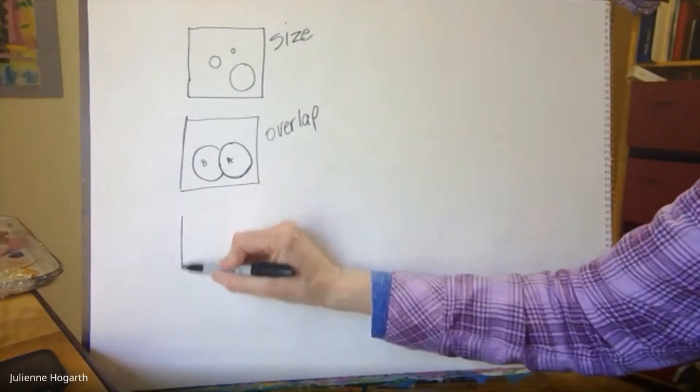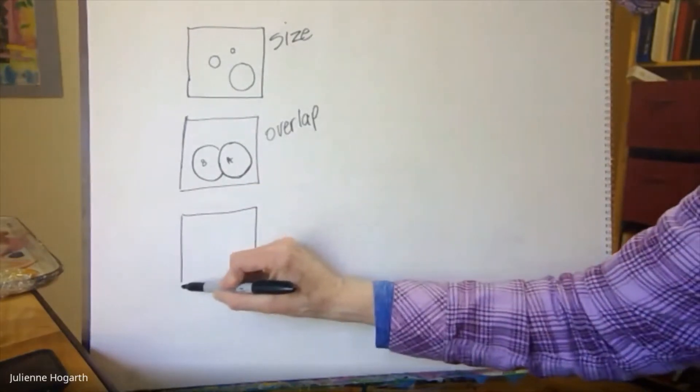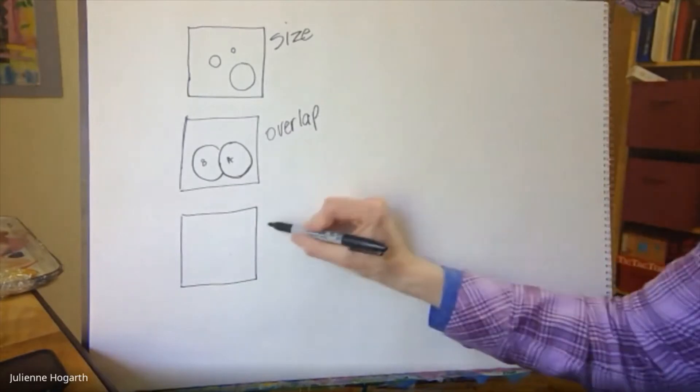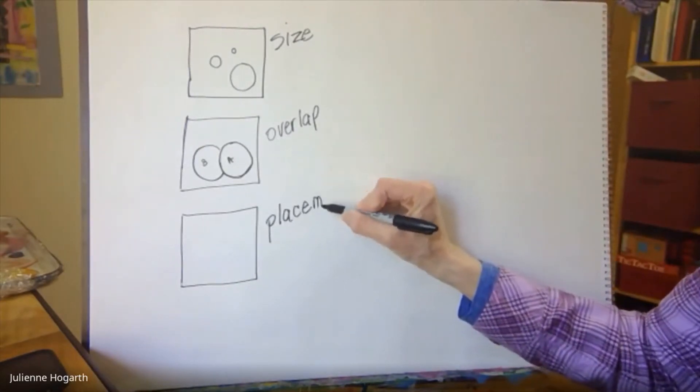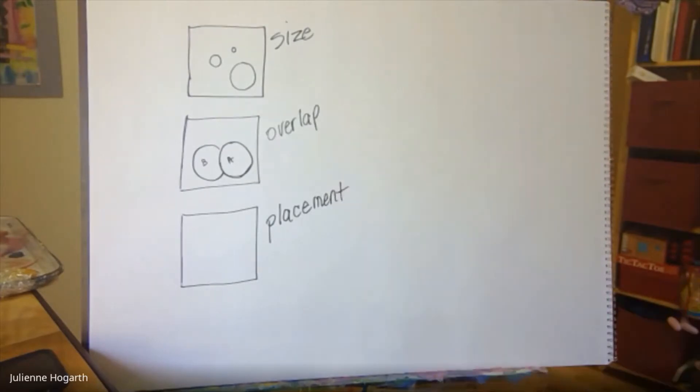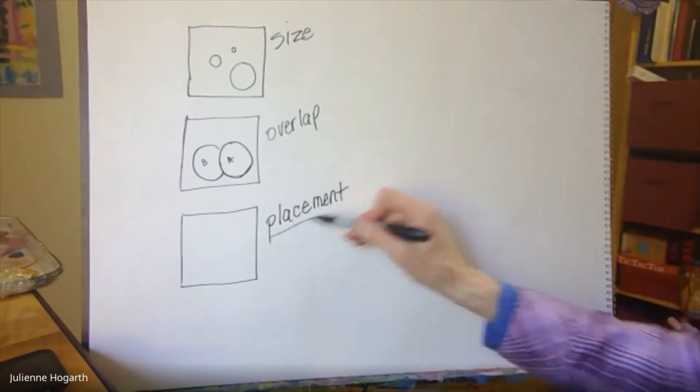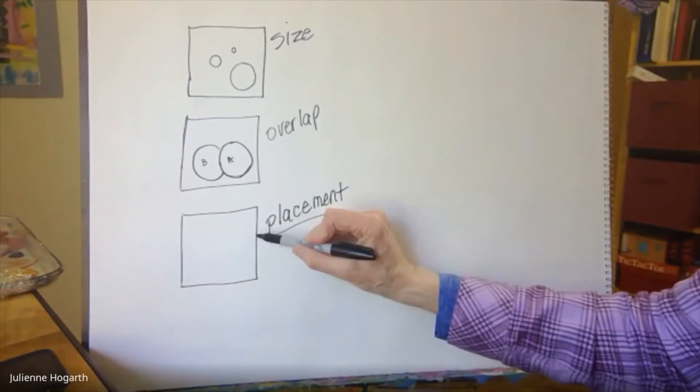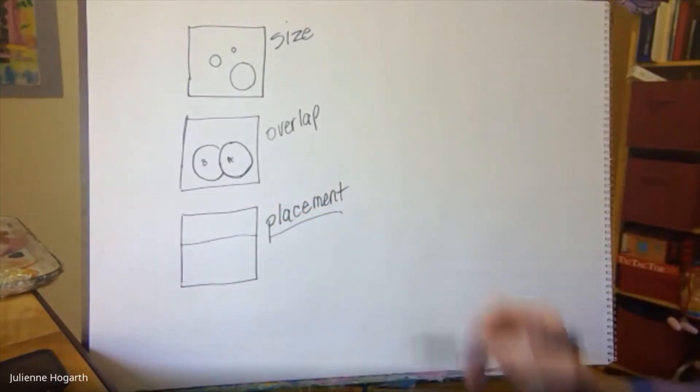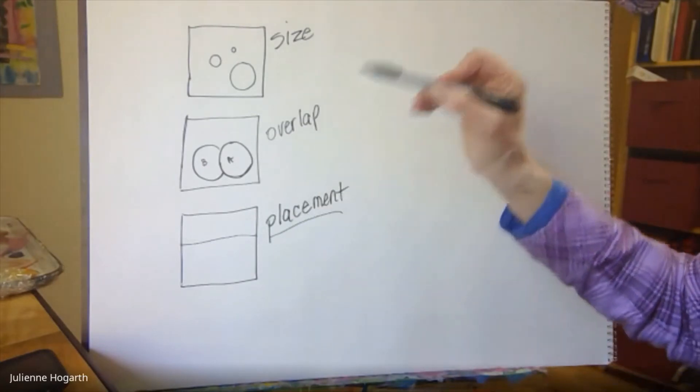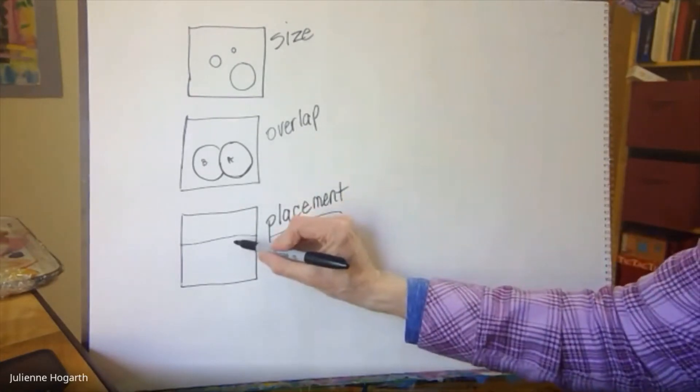Now this one's tricky. A lot of people call it different things. I like to call it placement because so everything is placed close to the horizon line. Okay so what you have to have is a horizon line. A lot of people tell you if it's further away it's higher on the page.